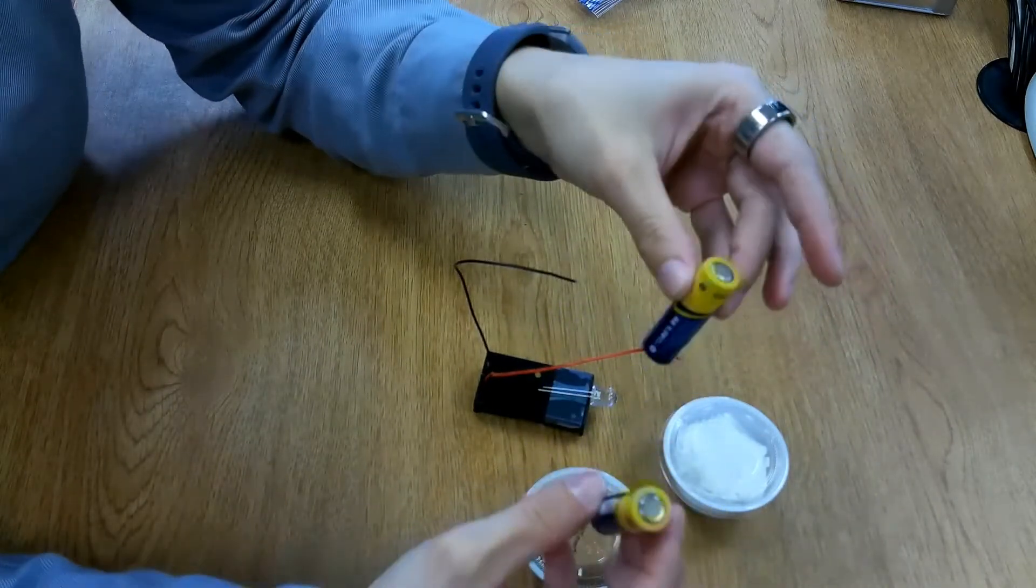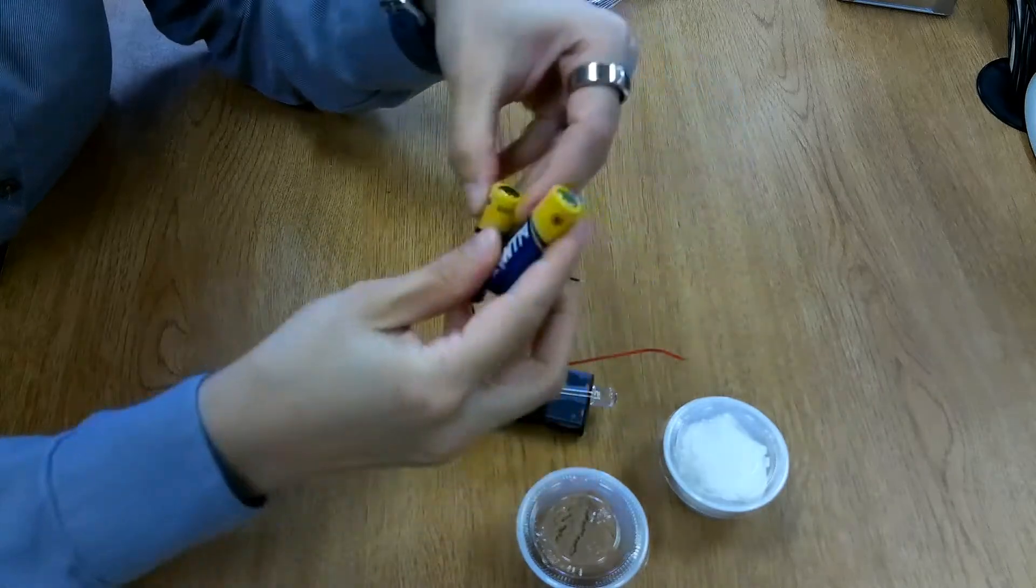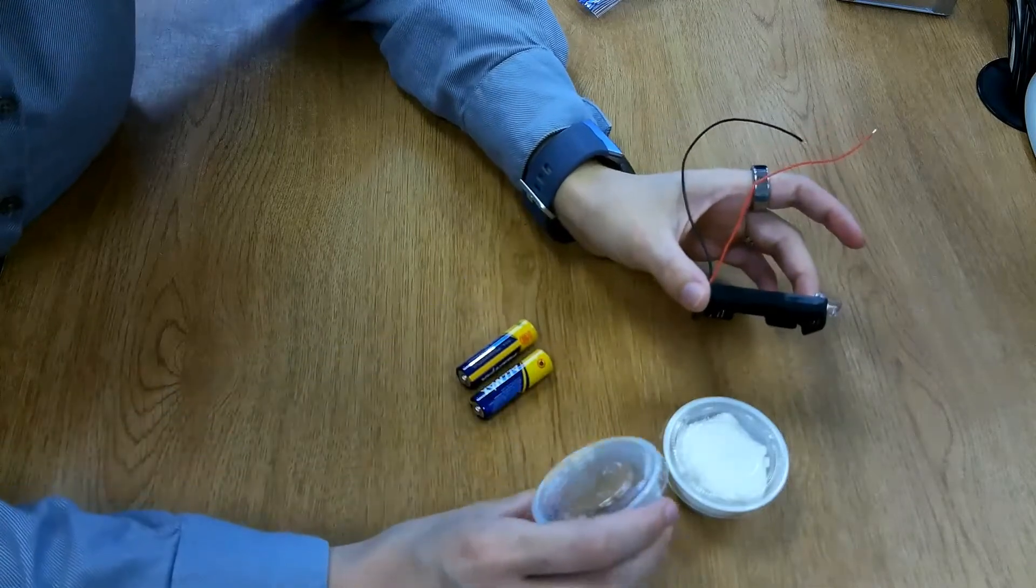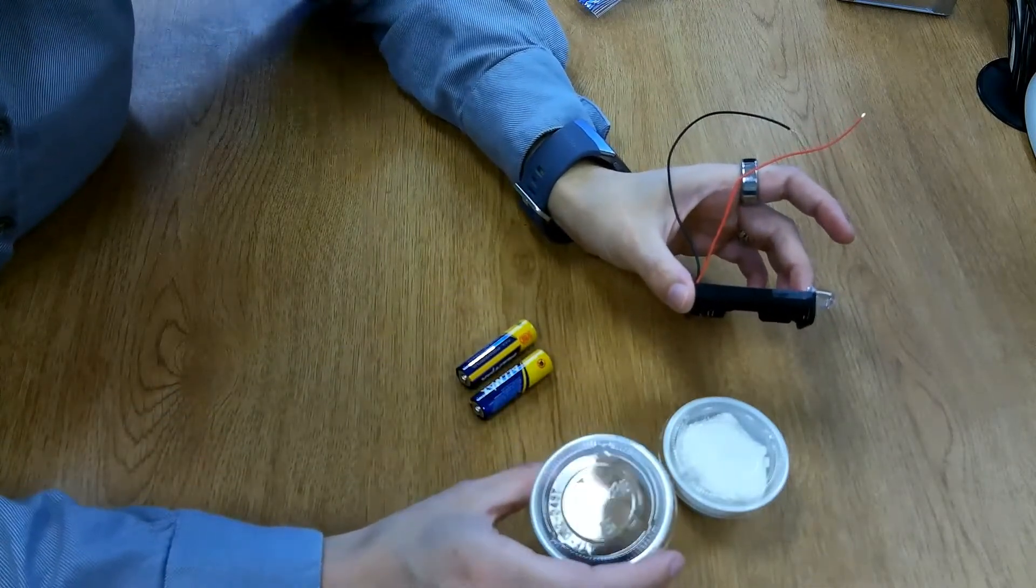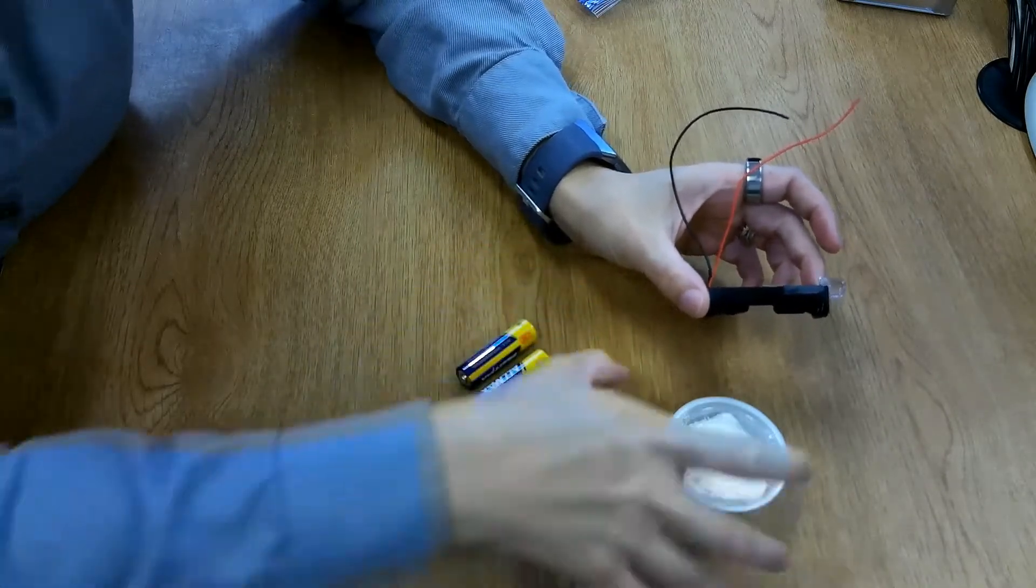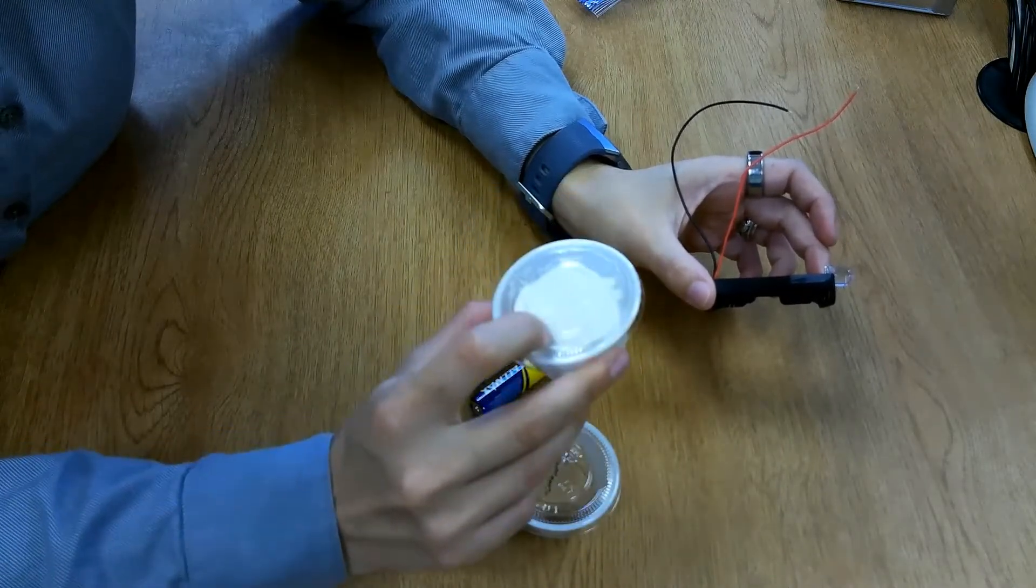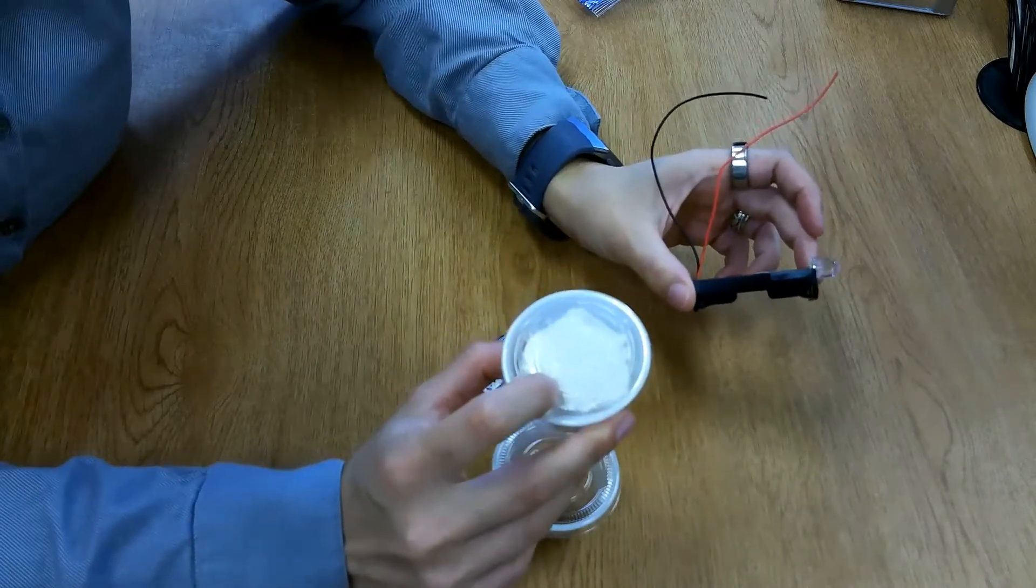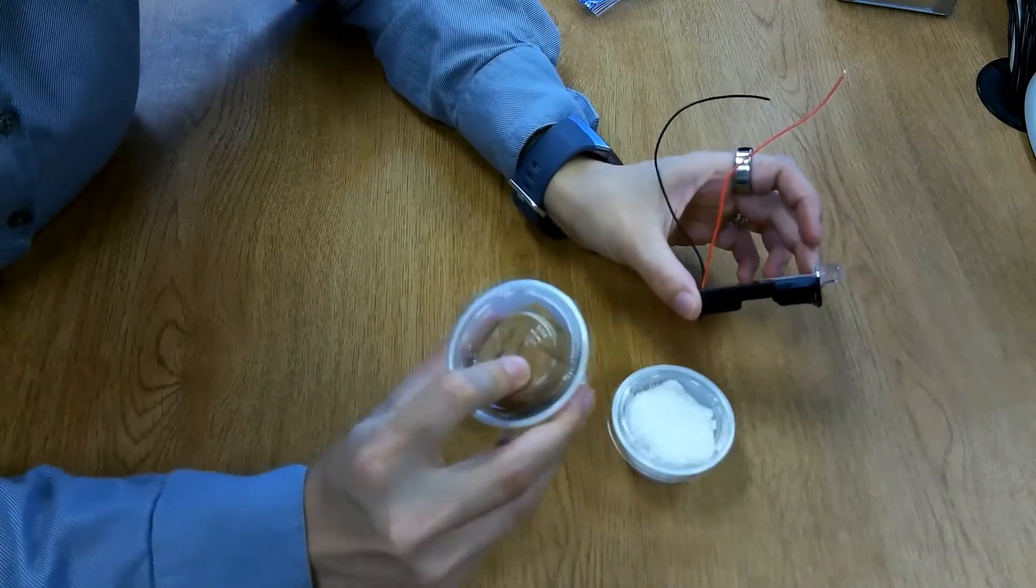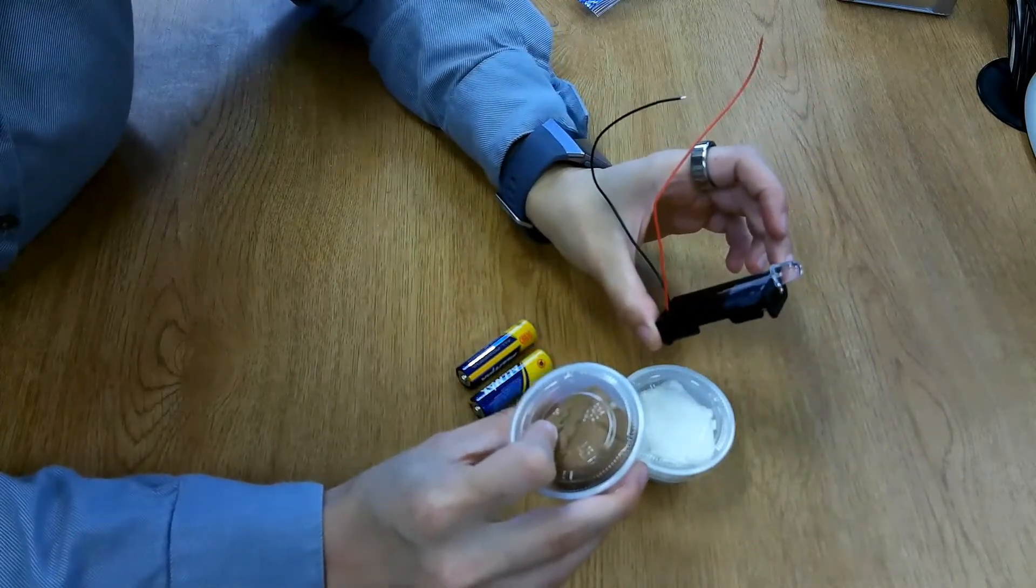We're going to install these batteries towards the end, and together the 1.5 volt batteries will make three volts of electricity. We're going to learn about conductors and insulators today. This Play-Doh, because of the salt in it, is a conductor, whereas this Model Magic dough is an insulator. The Model Magic is going to stop the electricity from running through, whereas the conductive Play-Doh with the salts makes it easier for electricity to run through.